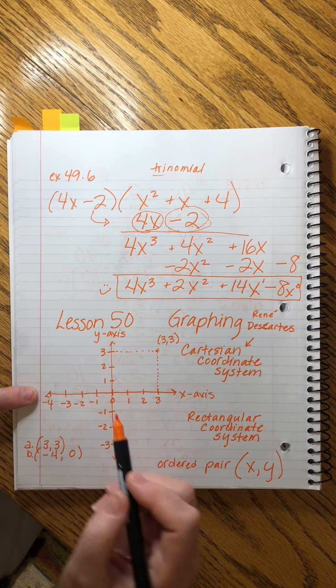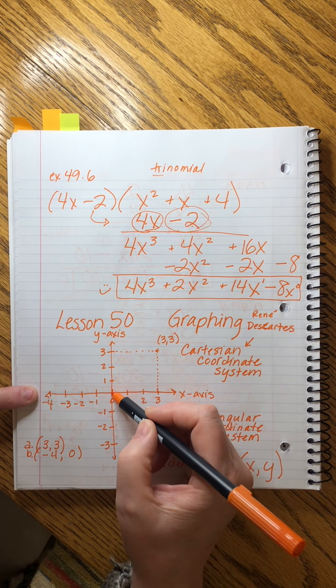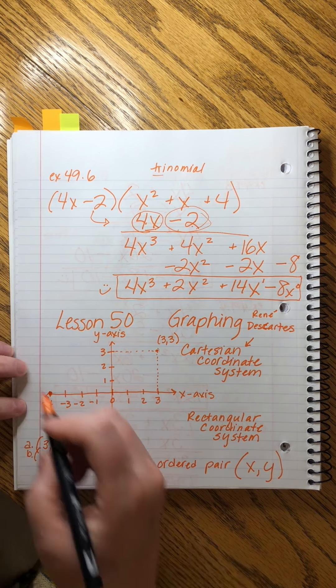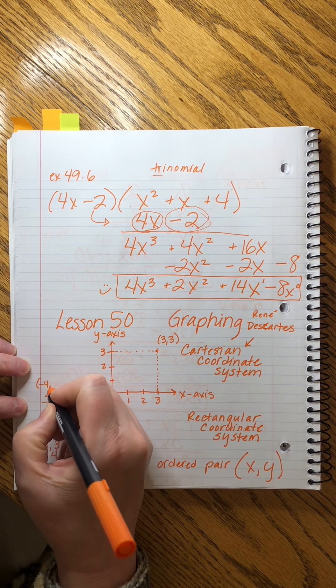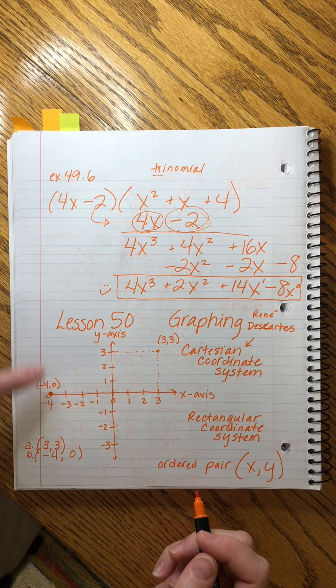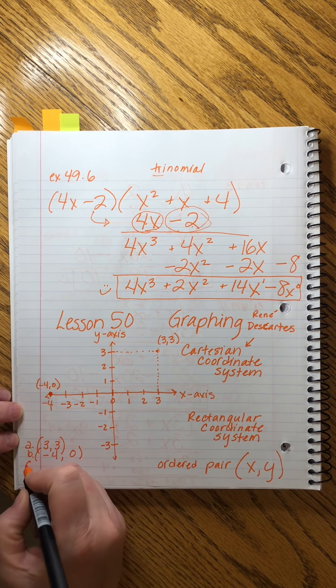And then 0 on the y-axis. So that means we stay right here, so I can't really draw a rectangle for this one, but you get the idea. So this is point (-4, 0). And we label our points, just like I did here, so that we know the name of that point that was important to us.